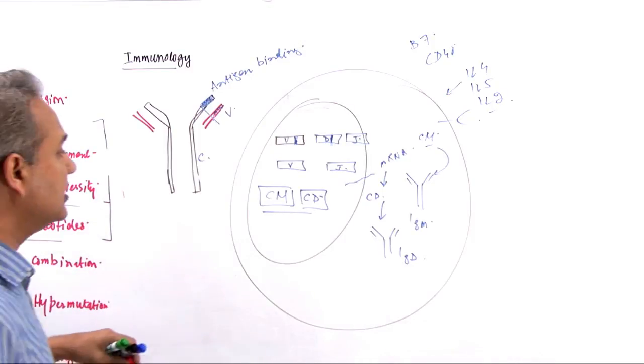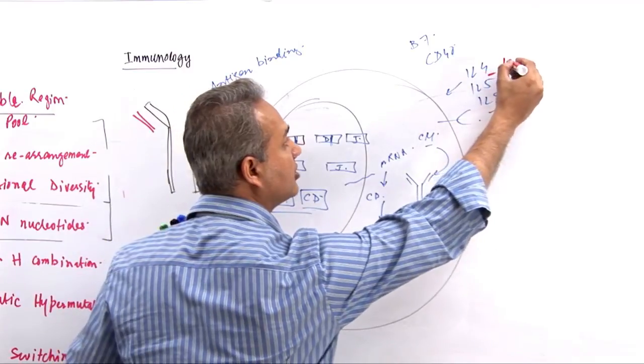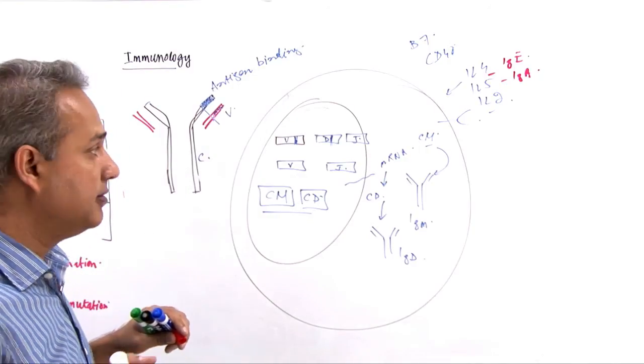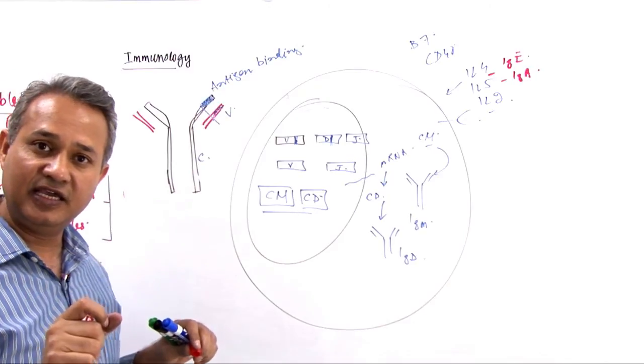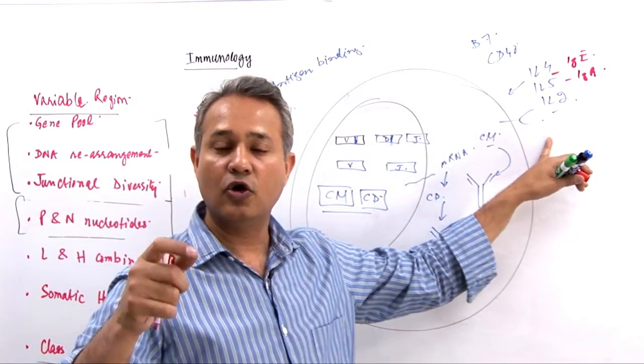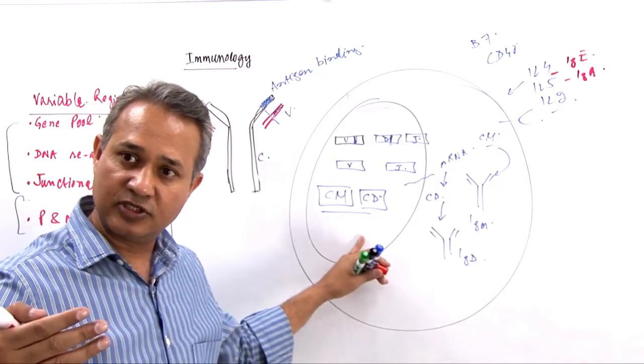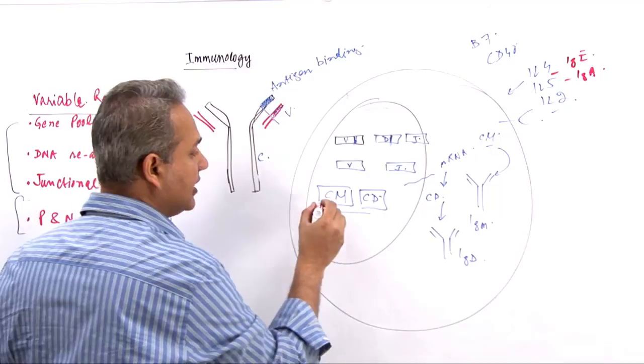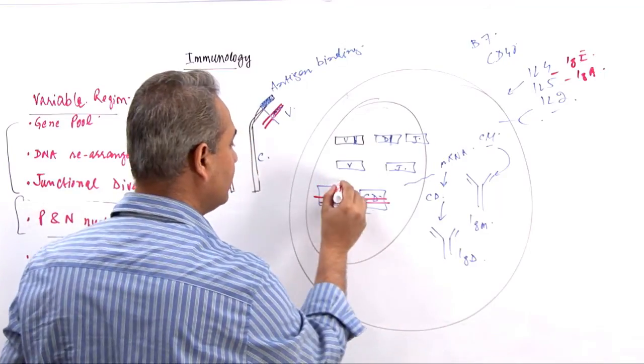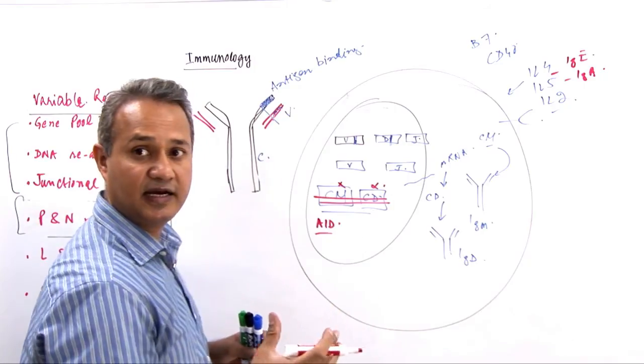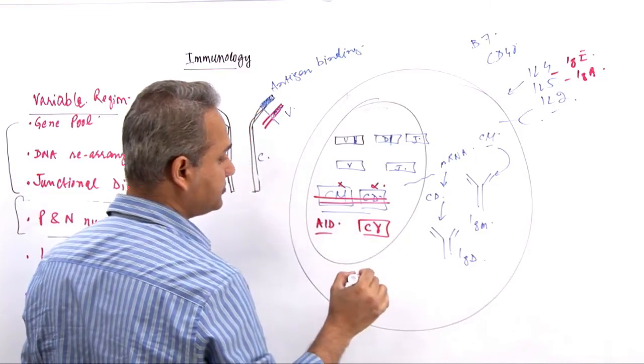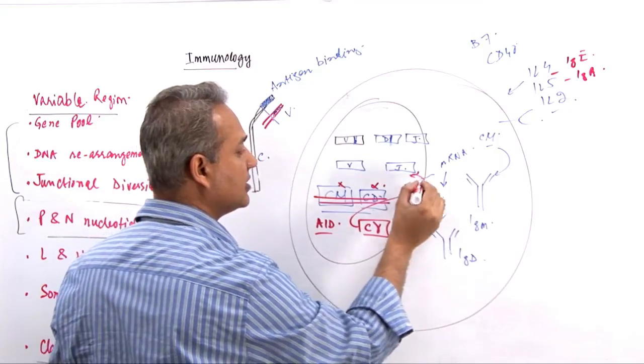So that is somatic hypermutation, and finally, the class switching. The class switching mechanism: IL-4 towards IgE, IL-5 towards IgA, viruses towards IgG1, bacteria towards IgG3, helminths towards IgE. So various kinds of environmental factors, microenvironmental factors, or pathogens can make a B cell do a class switch to a different type of immunoglobulin. Once a class switch is done, a particular gene is removed and another gene is engaged. For example, if you wanted to make IgG, we'll remove C mu and C delta. The AID enzyme takes part in that and starts it. So now what would happen is that C gamma will be engaged, and that will now start creating IgG.